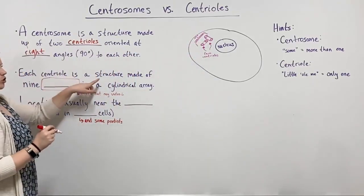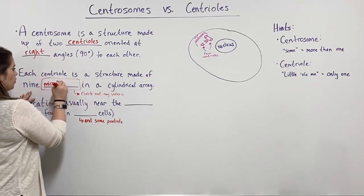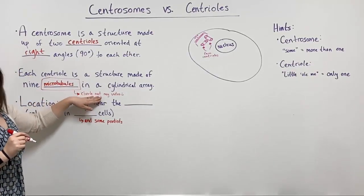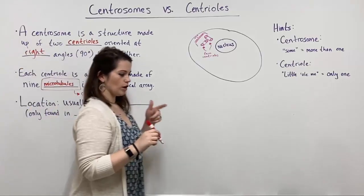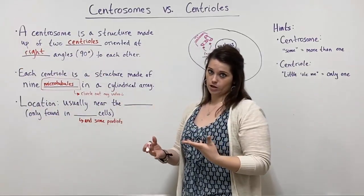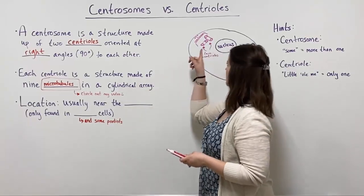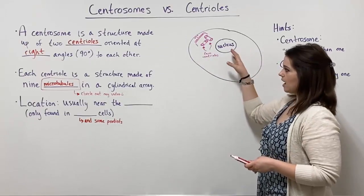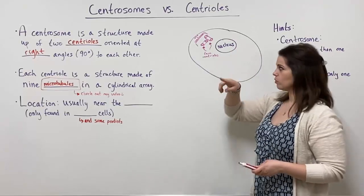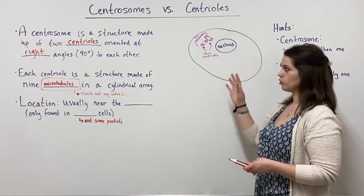Each centriole is a structure made up of nine microtubules. There is an entire other video on the cytoskeleton where you can learn about microtubules, microfilaments, intermediate filaments, and their functions and structures — so check that out if you're interested. Each of these centrioles is made up of nine microtubules arranged in a cylindrical array, meaning they form a cylindrical type structure, like a cylinder.